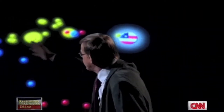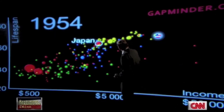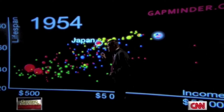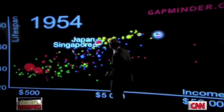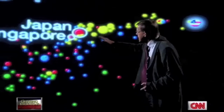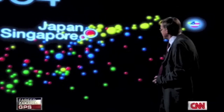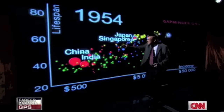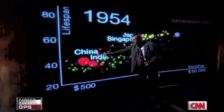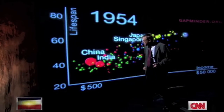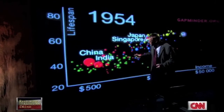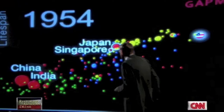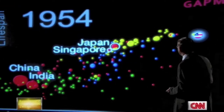Europe had fallen behind, and Japan was trying to catch up. A small country on the equator — Singapore — was just behind. Latin America was in between, and China and India were still down here with low life expectancy and low incomes. But they had gained their independence, and look what happened after 1954.